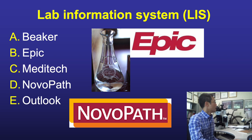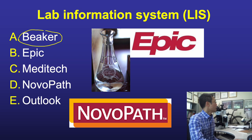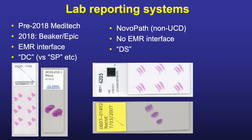Our dermpath service uses two different lab reporting systems. For UC Davis cases we have the Beaker lab reporting system, which is part of the Epic EHR. For outside cases that come from outside UC Davis, we have a separate system supported by Novopath. Trainees will essentially only be using the Beaker system, electronically interfaced with the Epic electronic medical records. Specimens submitted by UC Davis providers use a DC accessioning prefix, in contrast to the SP accessioning prefix for cases originating in the hospital pathology laboratory. For outside providers, we use the Novopath system with a DS accessioning prefix.